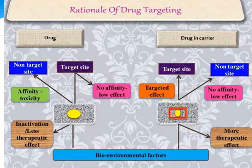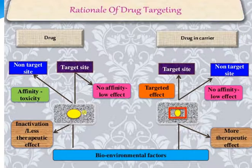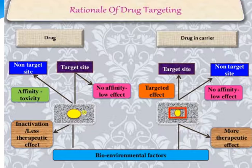Now this is the rationale of drug targeting. In the first diagram we can see the free drug. When it is administered to a particular person, its affinity for target and non-target sites is almost similar. So it is distributed in the body and the amount of drug that reaches the non-target site is very large, which may cause toxicity. However, the drug which reaches the target site may lead to inactivation or less therapeutic effect because the amount is very less.